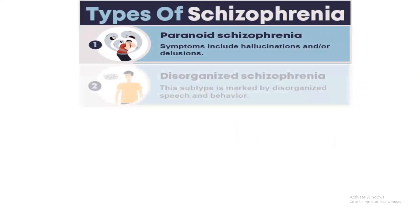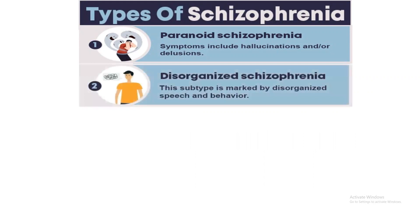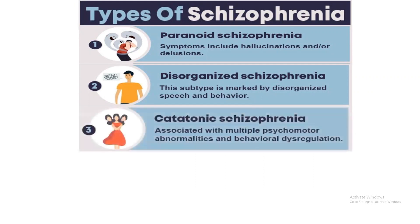What are the types of schizophrenia? Paranoid schizophrenia — symptoms include hallucinations and delusions. Disorganized schizophrenia is marked by disorganized speech and behavior. Catatonic schizophrenia is associated with multiple psychomotor abnormalities and behavioral dysregulation.